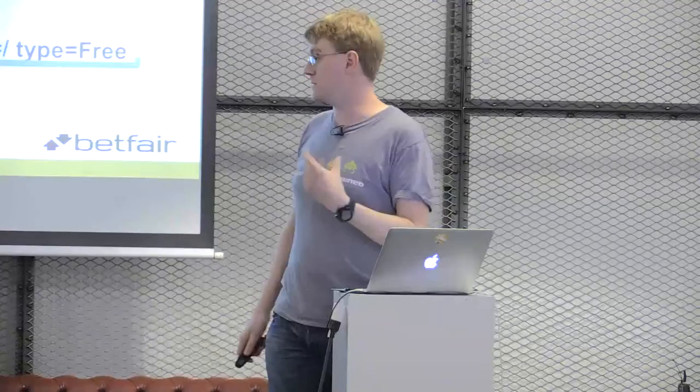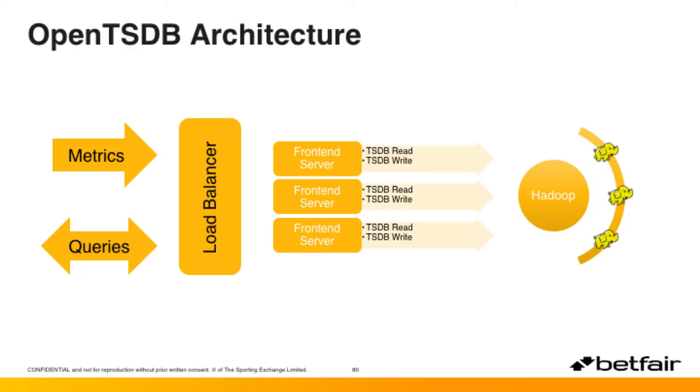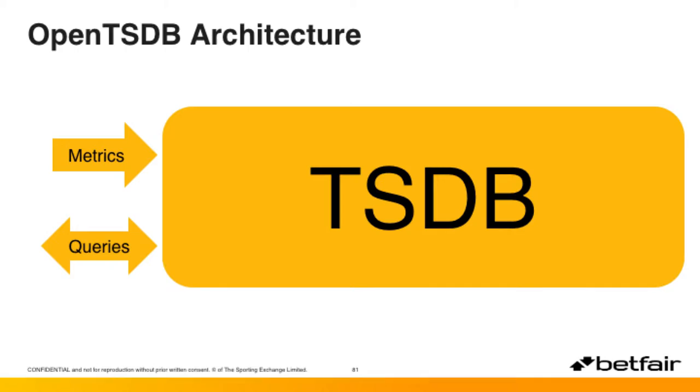I'll run you through quickly the architecture as we use it at Betfair, a quick story about how we use it for troubleshooting, and then go through where we ran into problems and what we've done to fix them. At its heart, OpenTSDB is basically an HBase database sitting on an HDFS cluster. Ours is running on six data nodes with about 40 terabytes of storage. We've got three front-end servers doing reads and writes, sitting behind a load balancer.